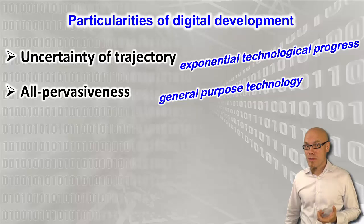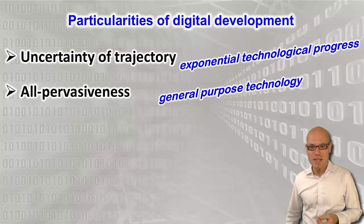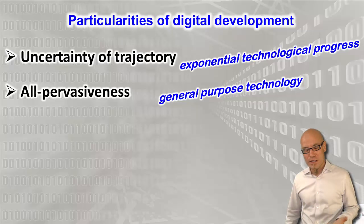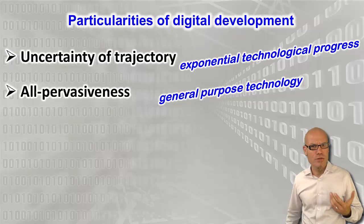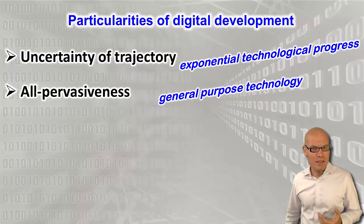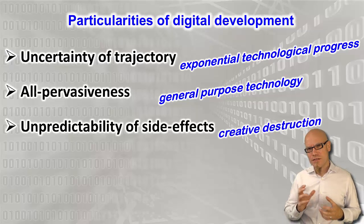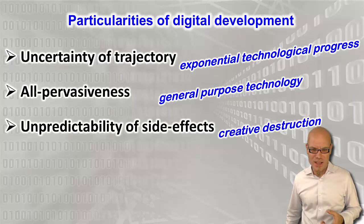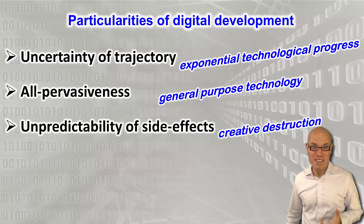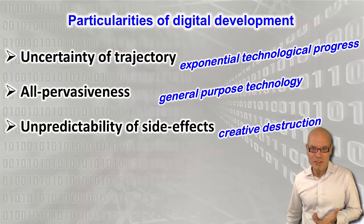Second, we are dealing with a general-purpose technology that is all-pervasive — it touches all different aspects from education to health to commerce to banking to the way that people find and fall in love. Third, the process of creative destruction that comes with it leads to many unpredictable side effects, because it is an entire ecosystem that changes with many interdependencies that make it extremely difficult to identify cause and effect.